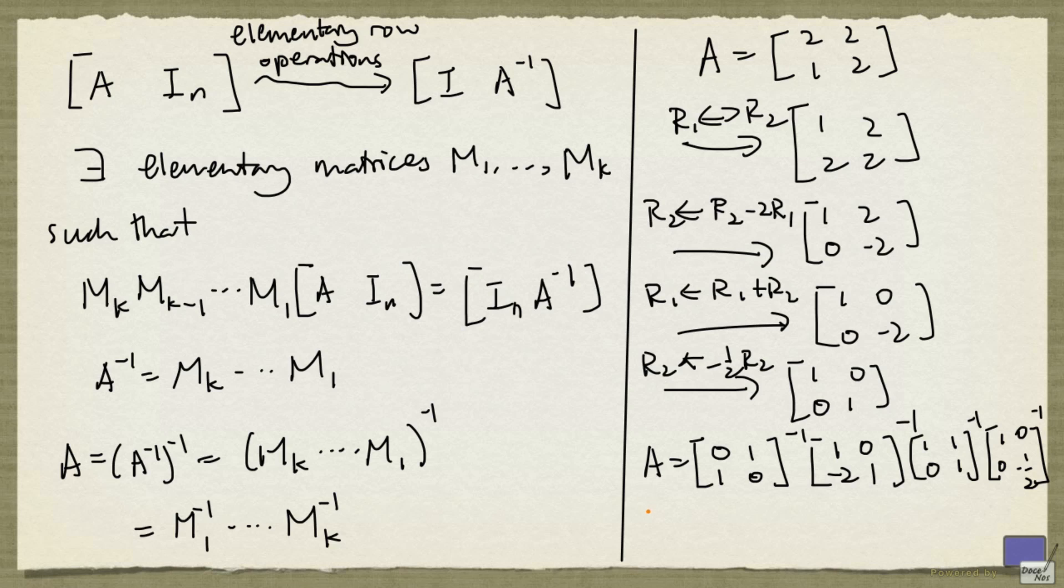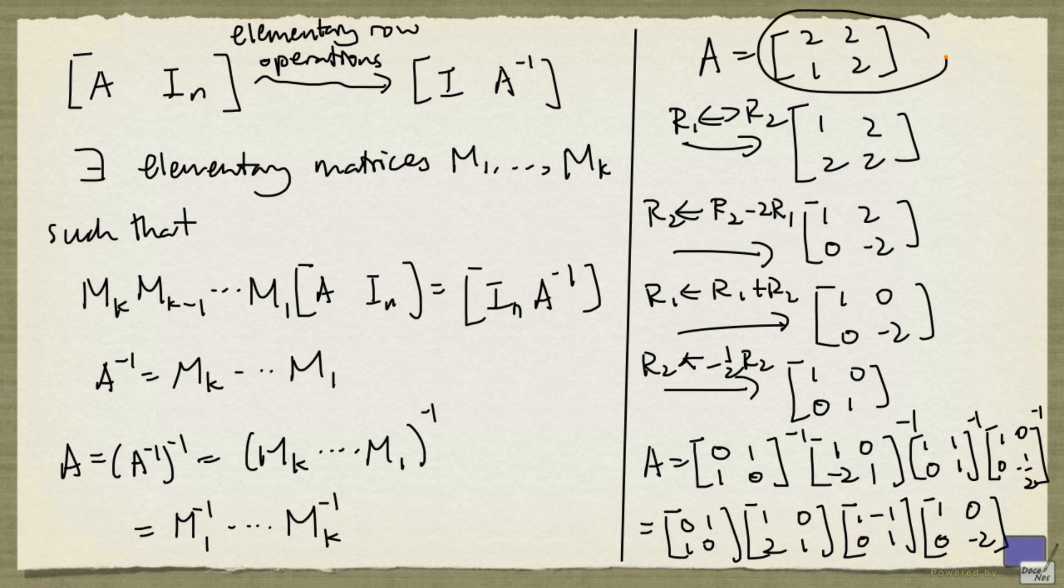So these are inverses, but inverses of elementary matrices are easy to form. So for this, the inverse is just itself. And for this matrix, we just turn the negative 2 to a 2. And for this matrix, we turn this 1 to a negative 1. And finally, we turn this negative half to negative 2. And you can check that this product does give you this matrix here.